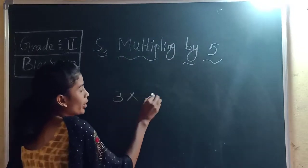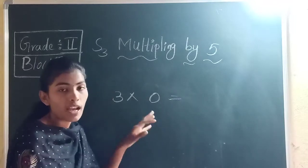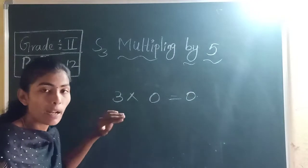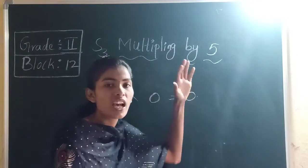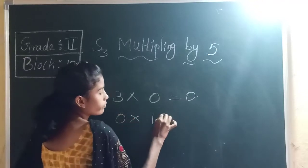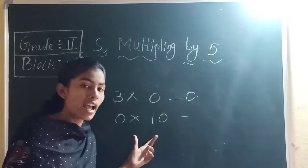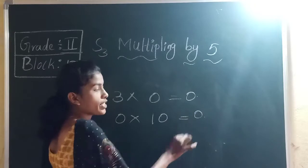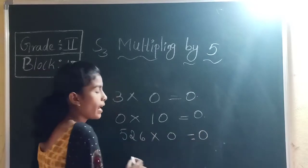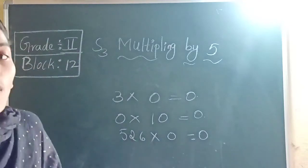So the multiply symbol is 'into'. For example, 3 into 0 is equal to 0. If you multiply any number with 0 — whether it is hundreds, tens, thousands — the answer will always be 0. For example, 526 into 0 is also 0. The answer we get after multiplying is called the product.